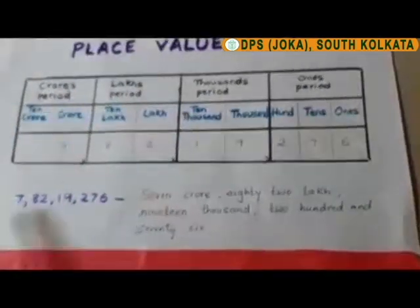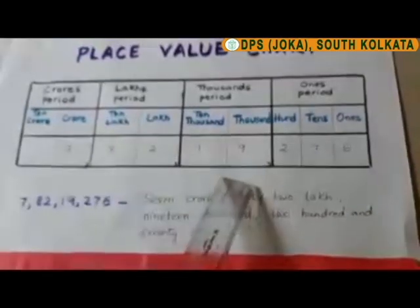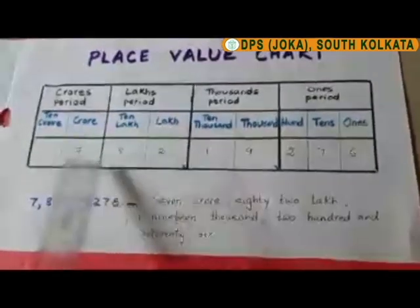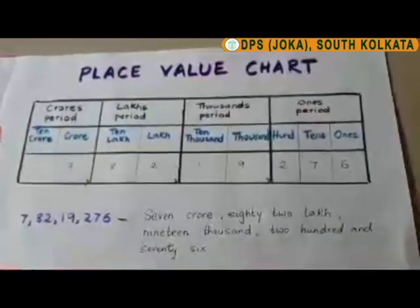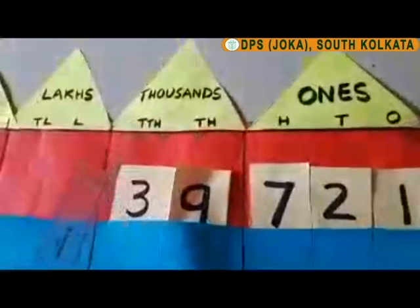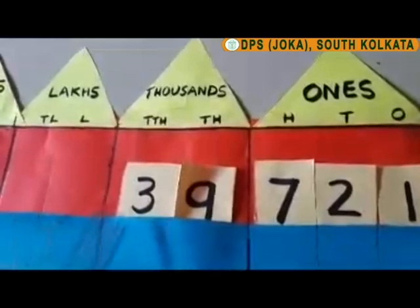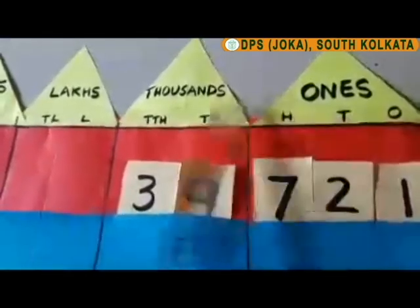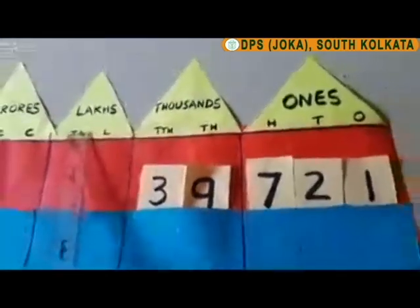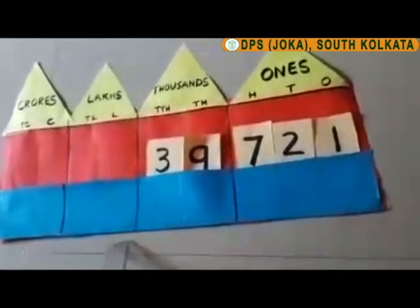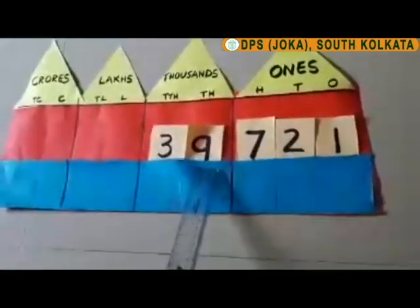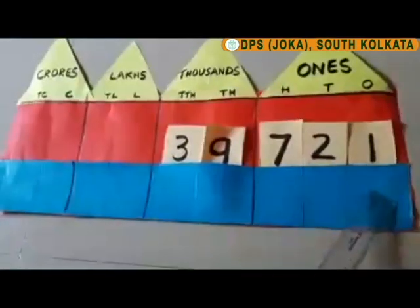Now let us see how we write the same number. You can write a few numbers in the place value chart and then learn how to read and write them. This is also a place value chart where we have the house of ones, thousands, lakhs, and crores. Here you can see the number 39,721.